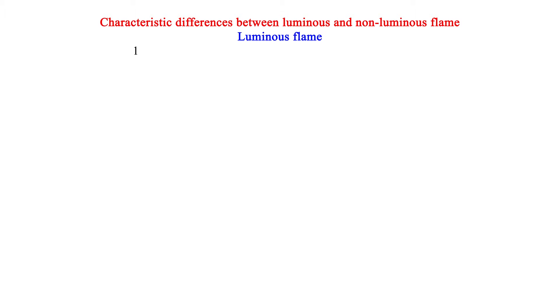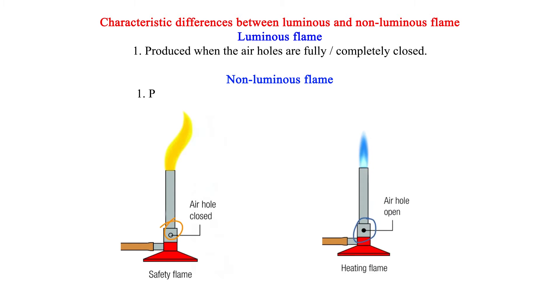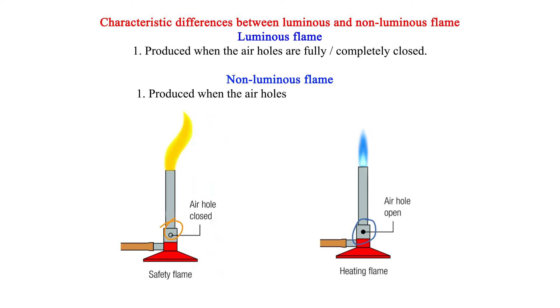Characteristic differences between luminous and non-luminous flames. Characteristic one: A luminous flame is produced when the air holes are fully or completely closed. A non-luminous flame is produced when the air holes are fully or completely open.